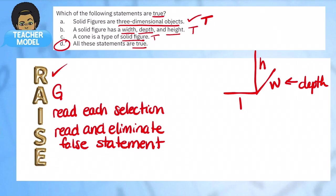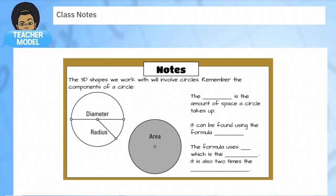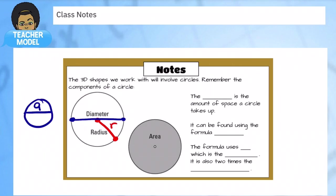Let's move to the next set of notes — some fill-in-the-blanks. The 3D shapes we work with will involve circles. Remember the components of a circle: going from the center to the outside is your radius. If they give you a line that goes from one edge to the other, that's a diameter — we want half of that. Half the diameter gives us the radius.